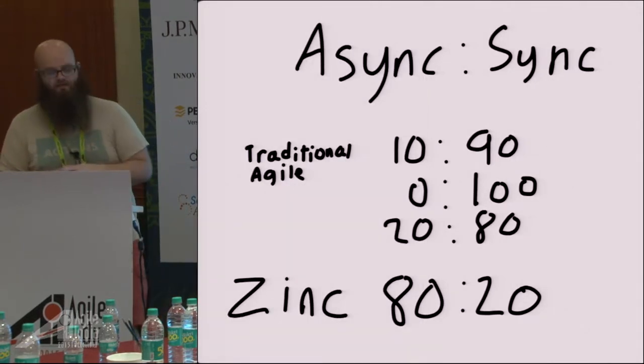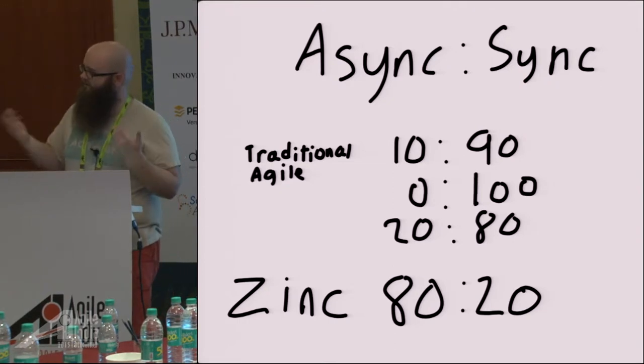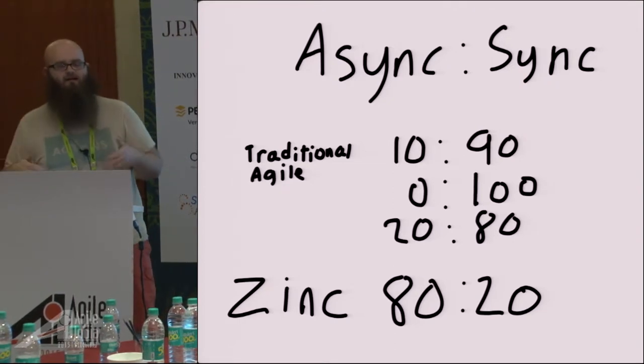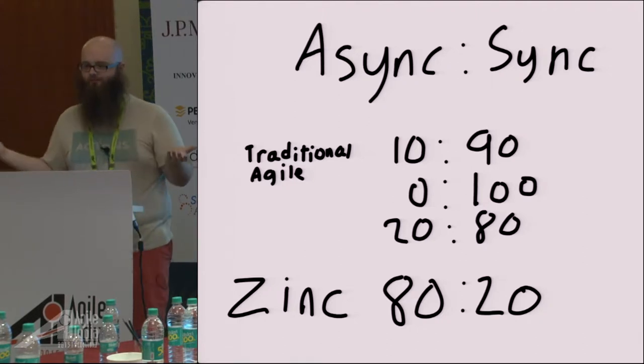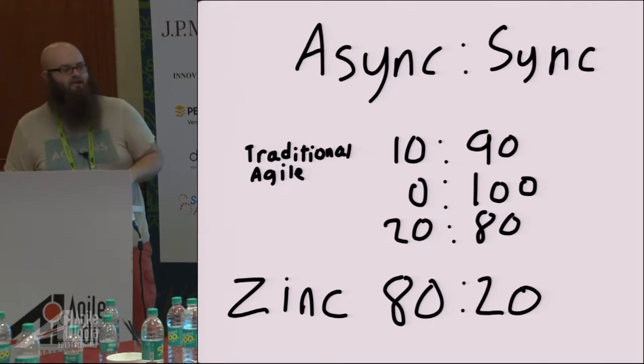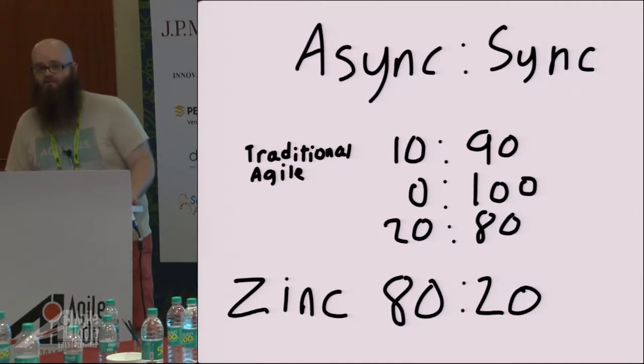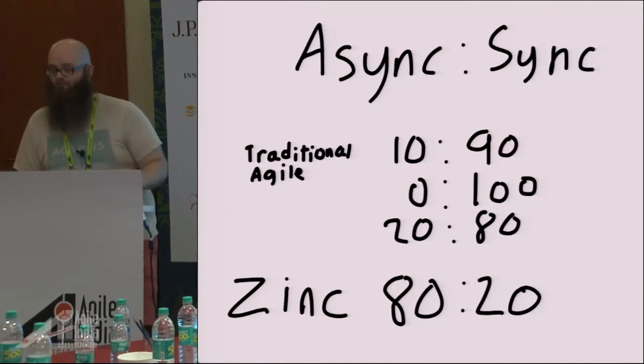In my experience, traditional Agile teams are about 10%, 20%, 0% asynchronous, and about 90ish percent, 100%, 80% synchronous. With my company, I'm working very hard to make that the opposite. I would like it to be 80% asynchronous and 20% synchronous. And I've got some reasons for that.